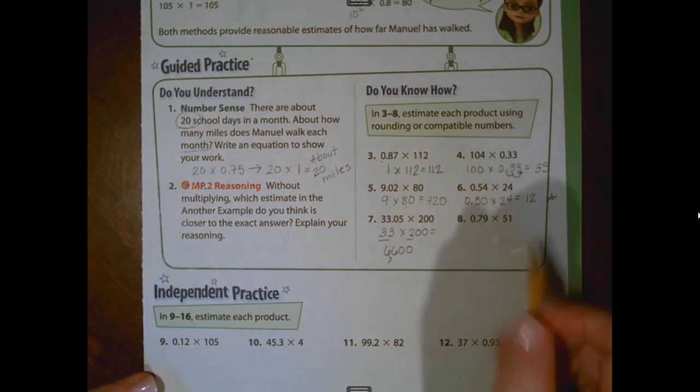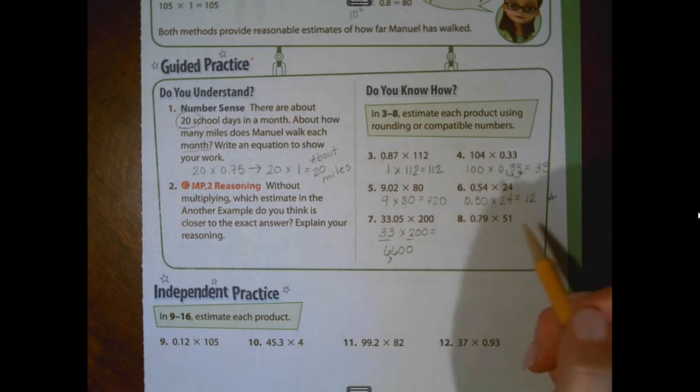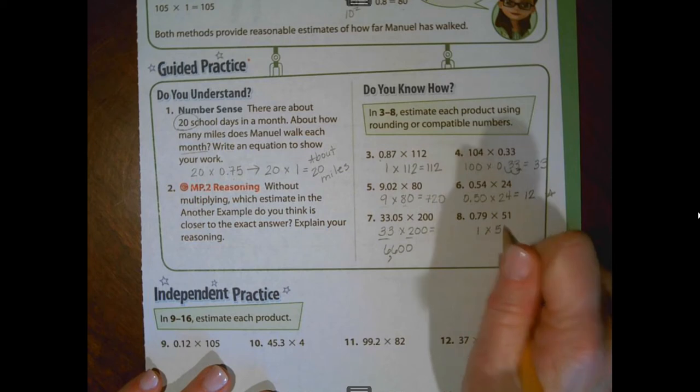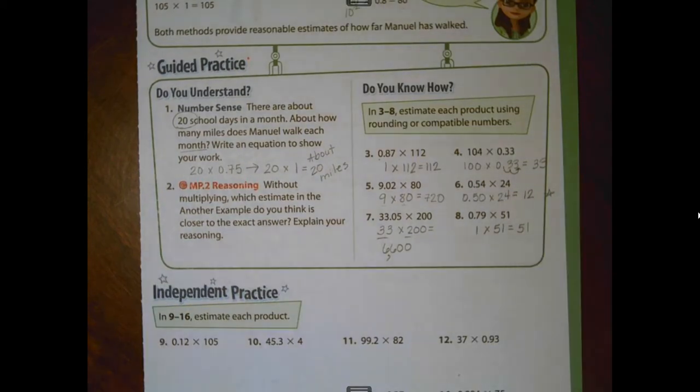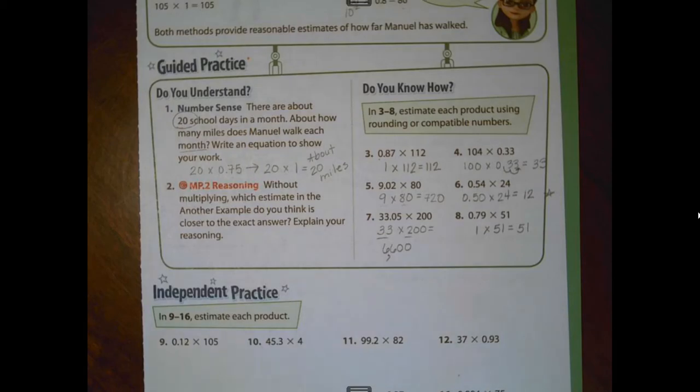Number eight, I'm going to round this one to the nearest whole number, one. I'm going to leave this 51 and just get an estimate of 51. Those are not – if you work these out, these are not necessarily the only way you could estimate, okay? You could use different rounding techniques. You could use different sets of compatible numbers. But your answer should be in the ballpark of what I have for estimates.